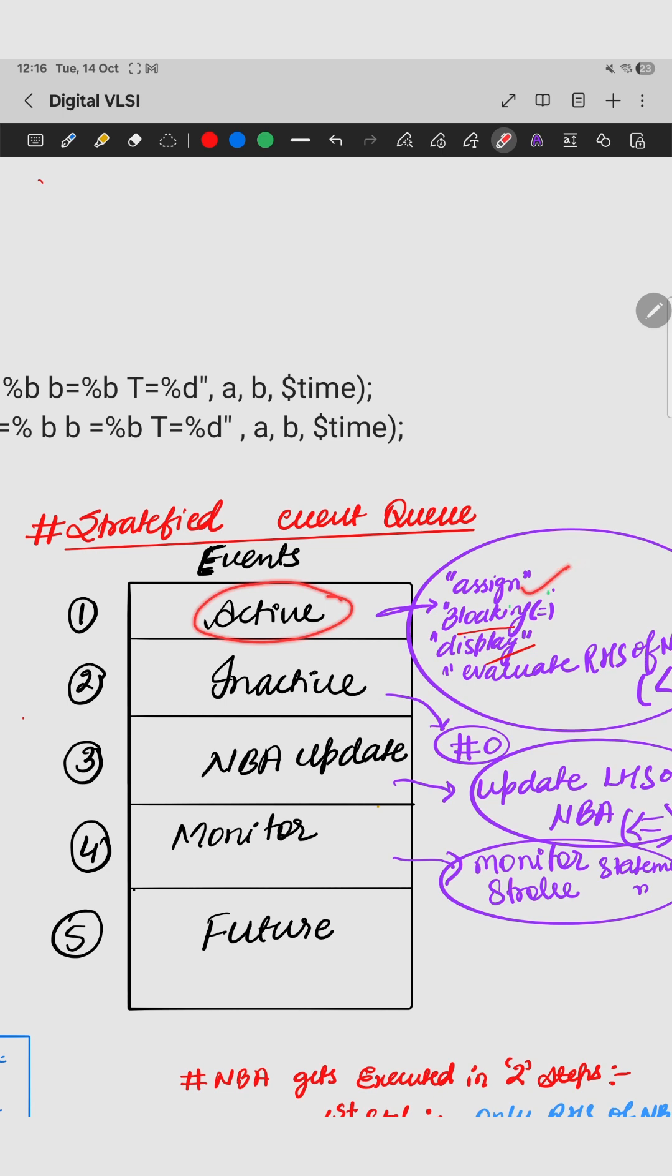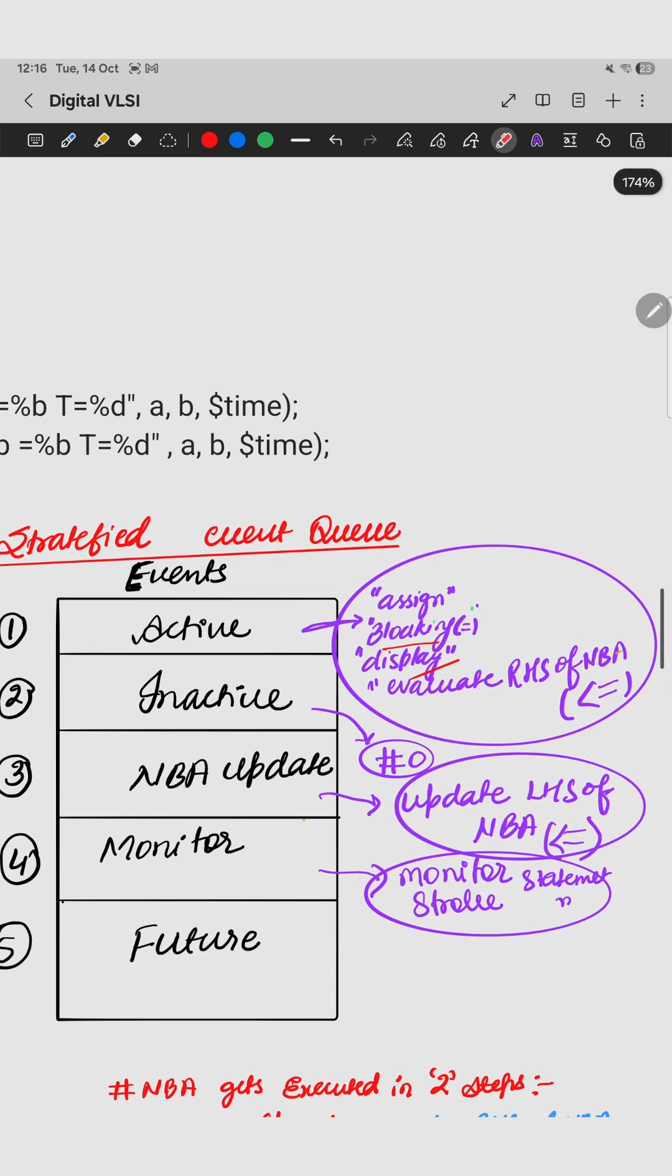First, active events come in which assigning statements are evaluated, blocking is evaluated, and display is evaluated. I have written only the RHS part of the non-blocking assignment is evaluated. Now in active part there is some type of delay, hashtag 0, that is our second priority. In the third one, NBA update—here only the RHS part of non-blocking assignment is there, but here we update the LHS also of the non-blocking assignment.